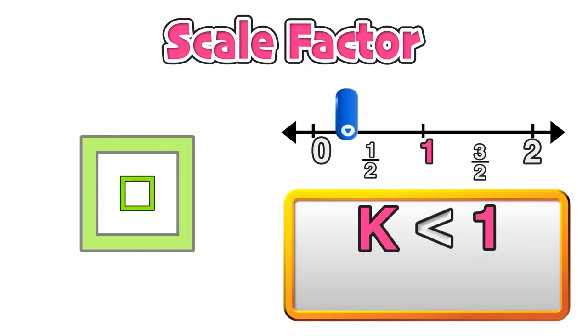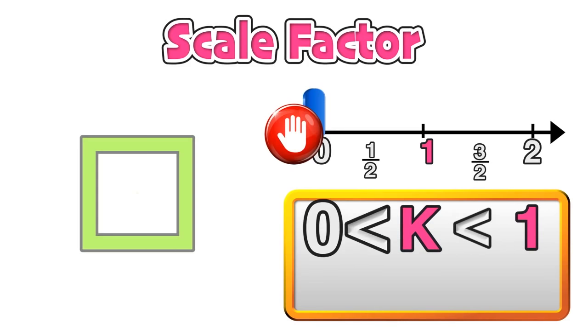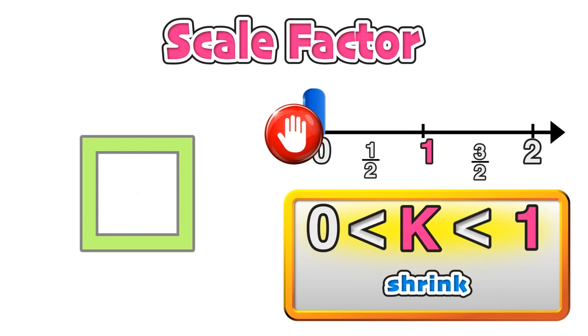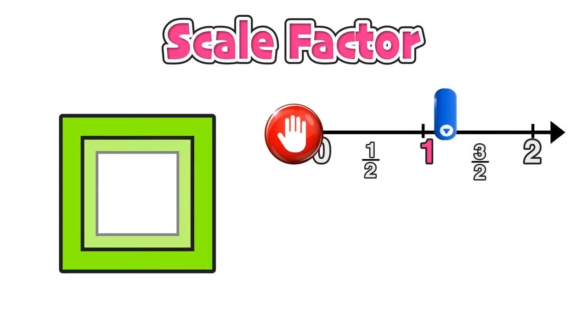Now we can continue to shrink this figure down in size until we reach 0. Since a scale factor of 0 would completely eliminate the figure, we can say that a scale factor of k that is greater than 0 but less than 1 would represent a shrink where the figure is made smaller in size. Note that this restriction only applies when the scale factor is less than 1. There is no restriction on stretching out a figure to a larger size.